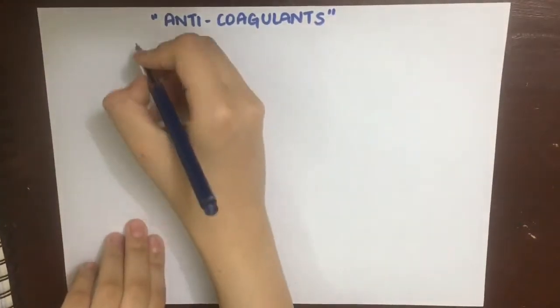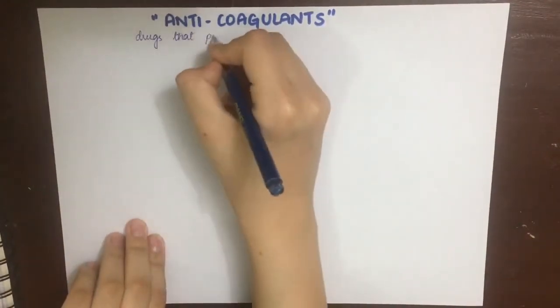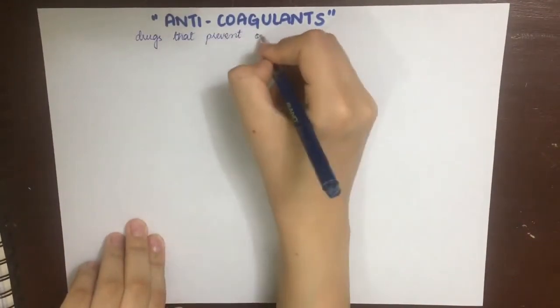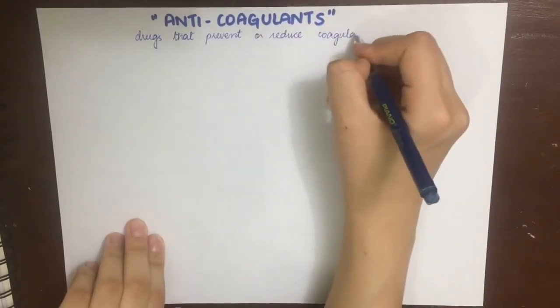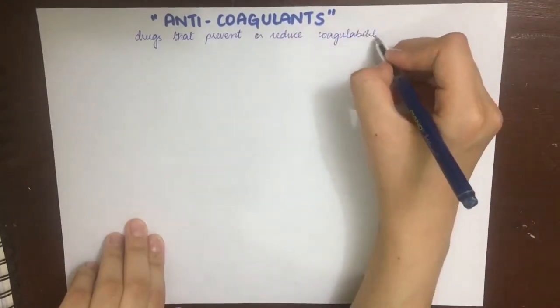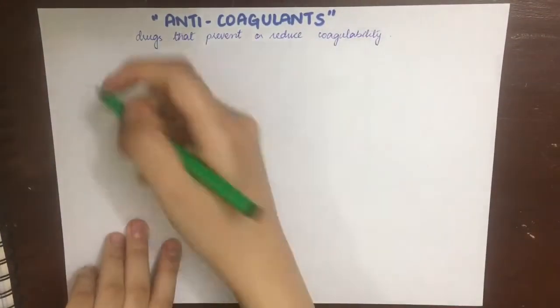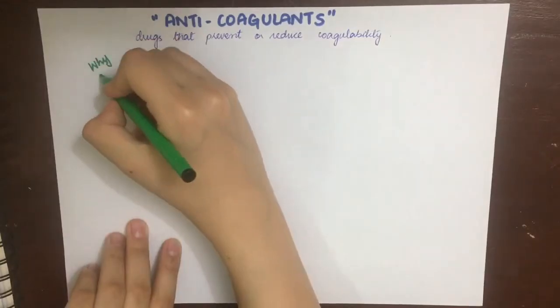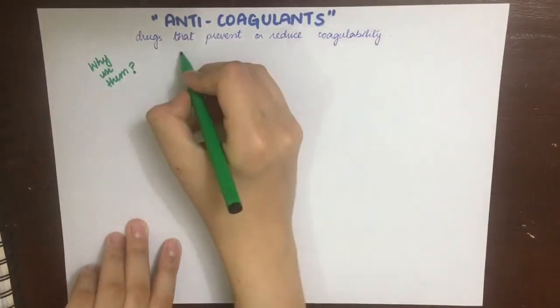Anticoagulants are drugs that prevent or reduce the coagulability of the blood. One thing to remember is that they cannot break the clot or thrombus once it is formed. They can only be used as a preventive measure.